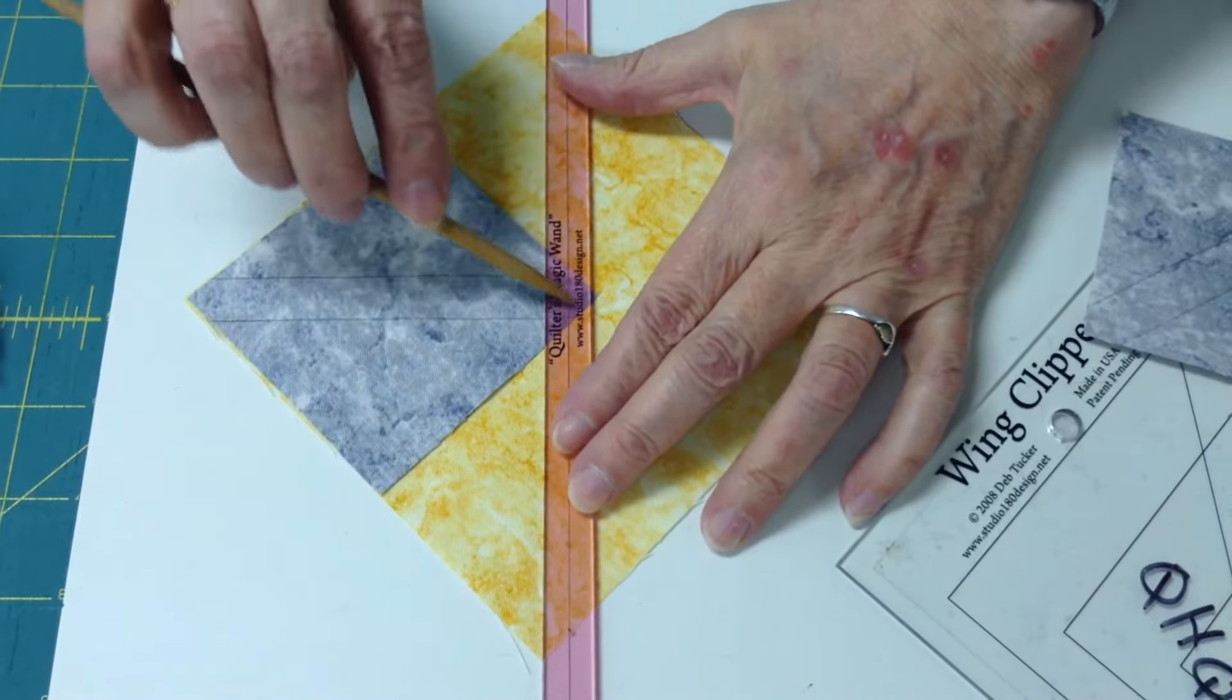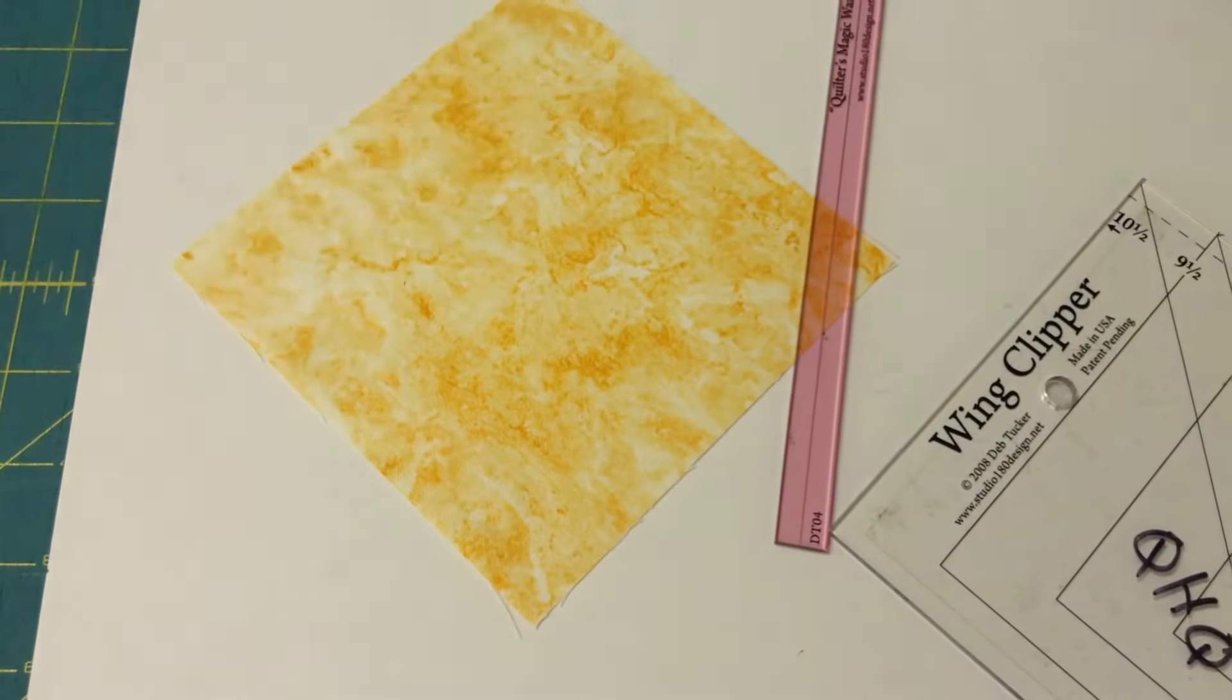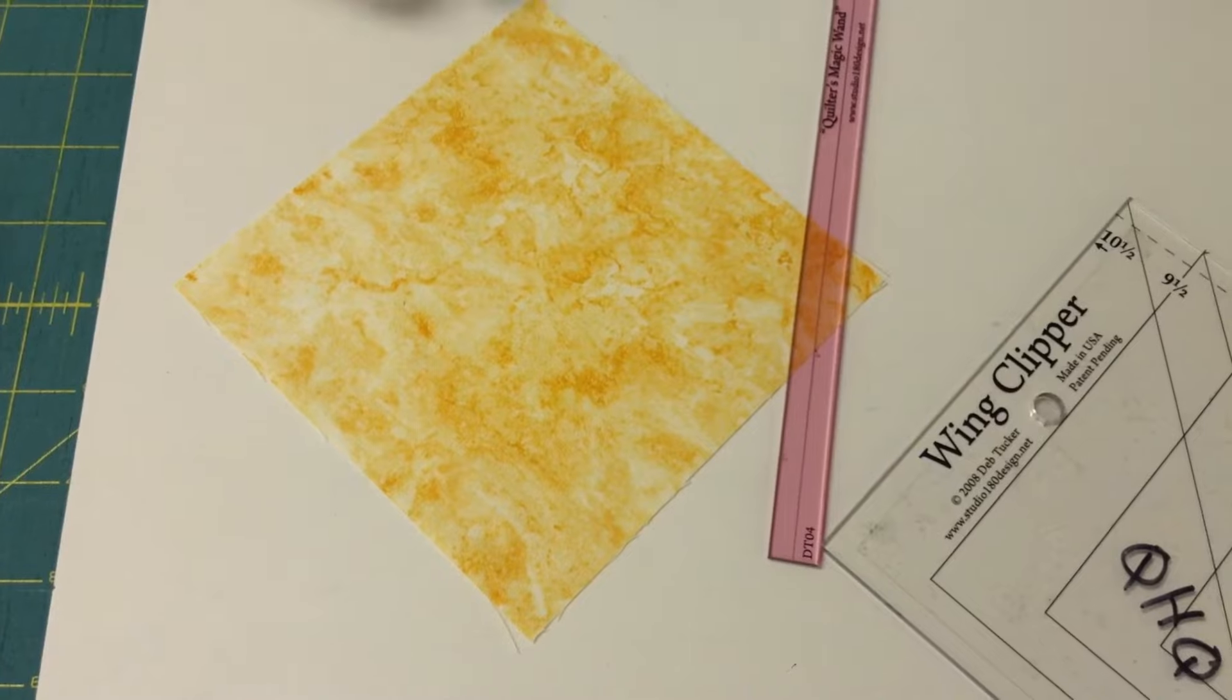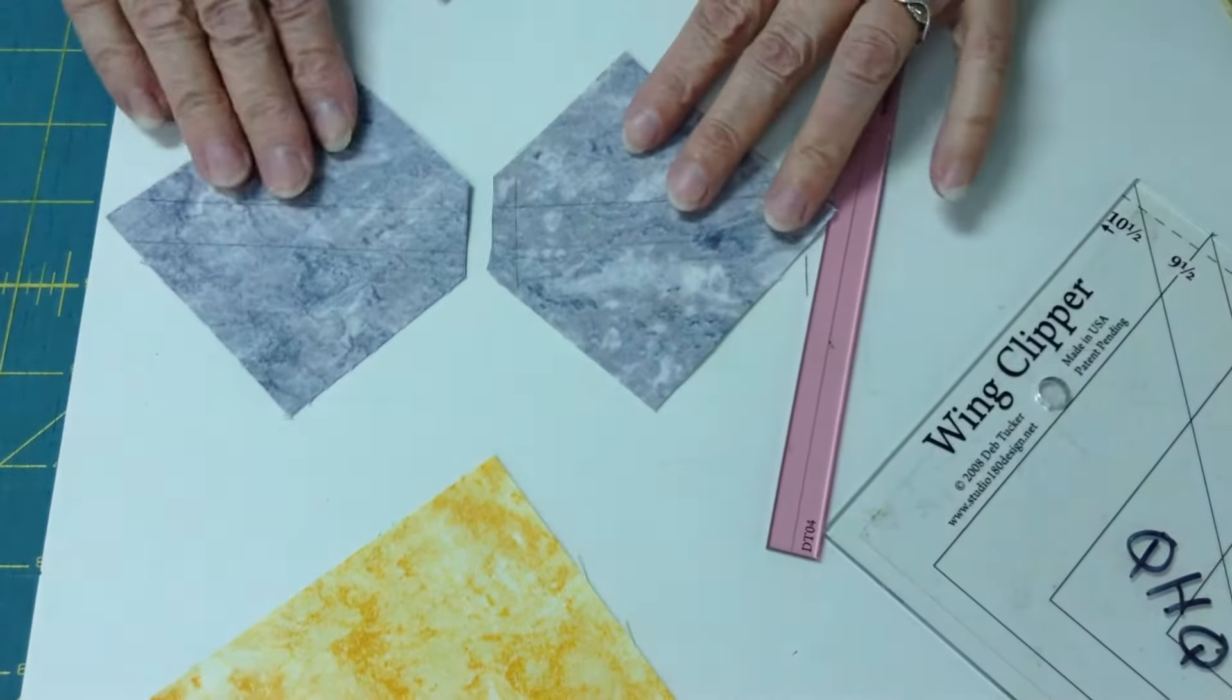Now I'm on the corners. I'm not on my middle piece. And then I'm going to trim on those lines that I just drew, right?